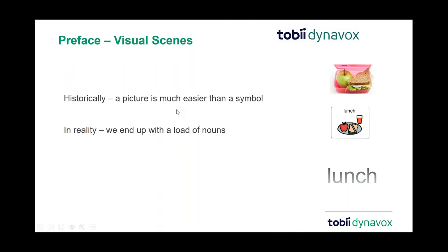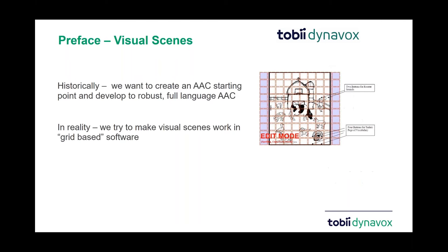The long-term goal is to drive the child from a photo representation all the way through to a word representation, but that takes time. We should definitely be presenting kids with words as soon as possible. Historically we'd start with a visual scene to give somebody the concept of a simpler picture or something in context. Unfortunately with visual scenes we quite often end up with a load of nouns, because nouns are easy to photograph, whereas adjectives, pronouns, and verbs may not be — and we don't want to just teach names.